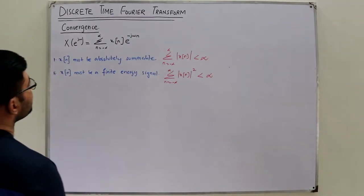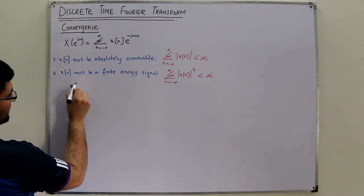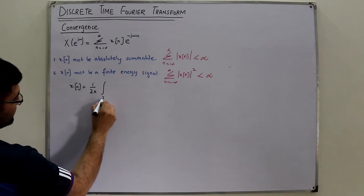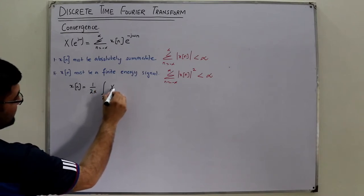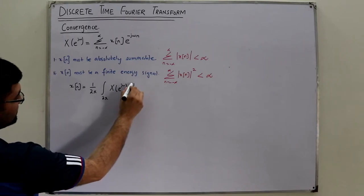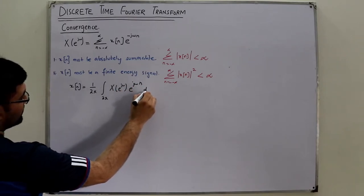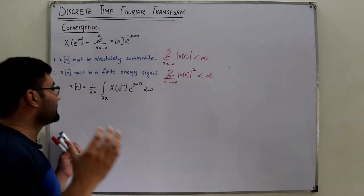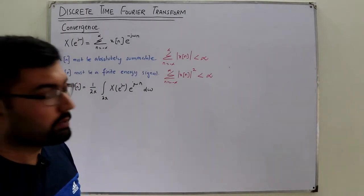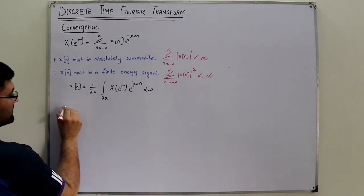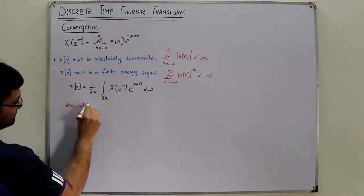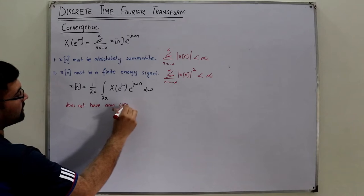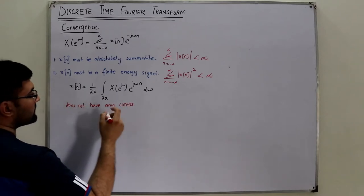Similarly, we have the synthesis equation of the DTFT. That is: x of n equals 1 over 2-pi, integrated over 2-pi, of X of e to the j-omega times the exponential of j-omega-n with respect to omega. Now, if we talk about the convergence of this equation — does it have any convergence issue? No, it does not. It will always converge.